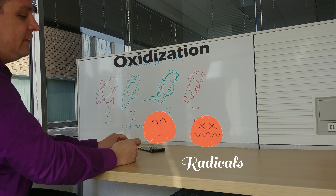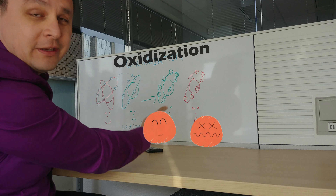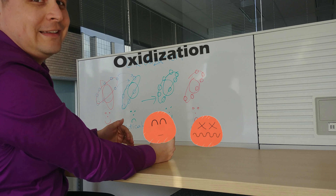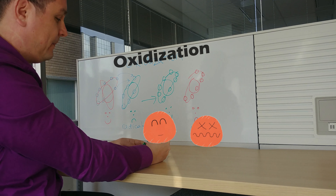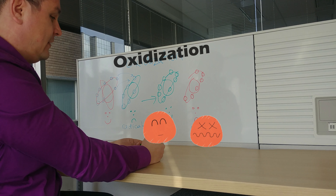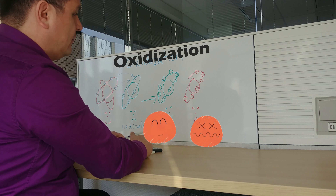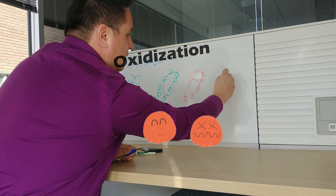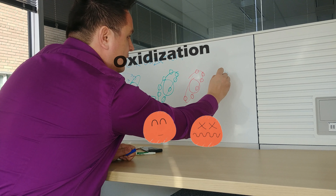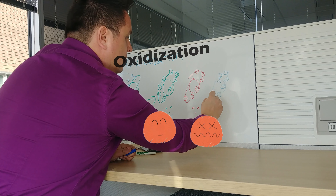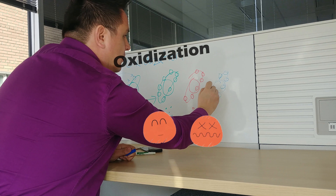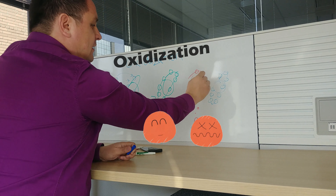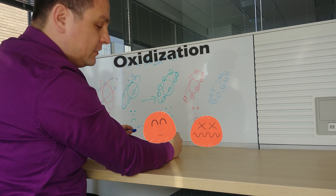The problem is that now this unstable radical is going to try to look for two more electrons to get its stability back. There's another molecule over here with eight electrons, and this radical is going to try to steal from it.